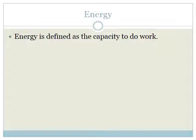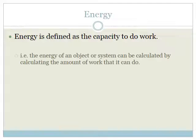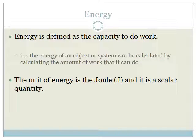Energy is defined as the capacity to do work — in other words, the ability to do work. The energy of an object or system can be calculated by calculating the amount of work that it can do. So if we know how much work something can do, then we know how much energy it had. The unit of energy is the joule and it is a scalar quantity.